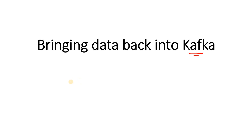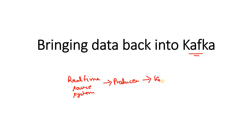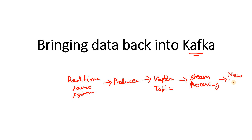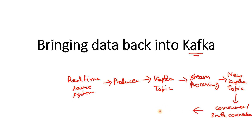Suppose we have a real-time source system. From there, using a producer, we are publishing the data in a Kafka topic. From that Kafka topic, we do some stream processing using Spark Streaming, Flume, or Faust application, and that processed data we load into a new Kafka topic on the consumer side. From that new Kafka topic, using a consumer or sink connector, we are dumping the data into an external system.